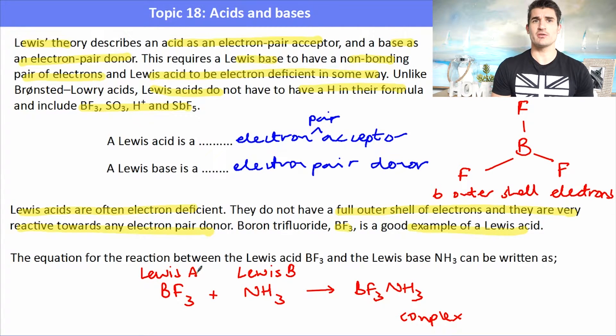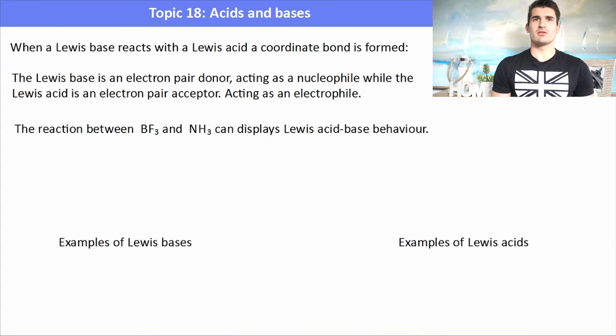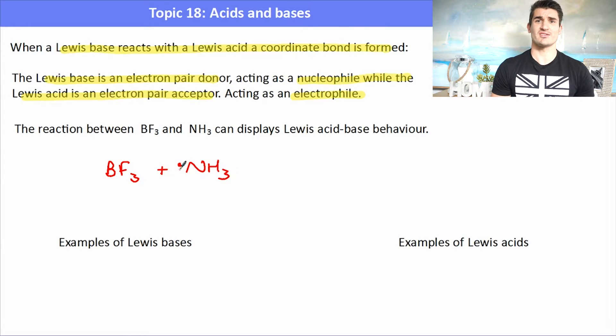So when a Lewis base reacts with a Lewis acid, a coordinate bond is formed where one of the atoms in the species is providing both of the electrons for the bond. The Lewis base is an electron pair donor acting as a nucleophile, while the Lewis acid is an electron pair acceptor acting as an electrophile. And we've talked about nucleophiles and electrophiles in topic 20.